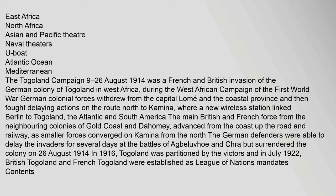The Togoland Campaign was a French and British invasion of the German colony of Togoland in West Africa. During the West African Campaign of the First World War, German colonial forces withdrew from the capital Lomé and the coastal province, and then fought delaying actions on the route north to Kamina, where a new wireless station linked Berlin to Togoland.